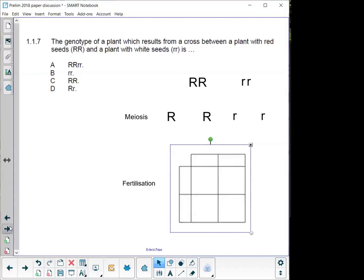Okay, so, the genotype of a plant results from a cross between a red seed, double R, that's capital R, capital R. That means it's going to be dominant. And a plant with white seeds, small R, small R, that's recessive. Okay, is. So, you need to draw yourself a quick little Punnett square and do the cross.